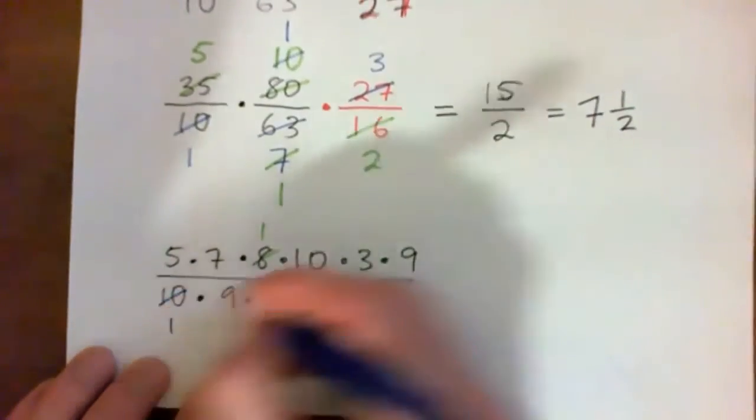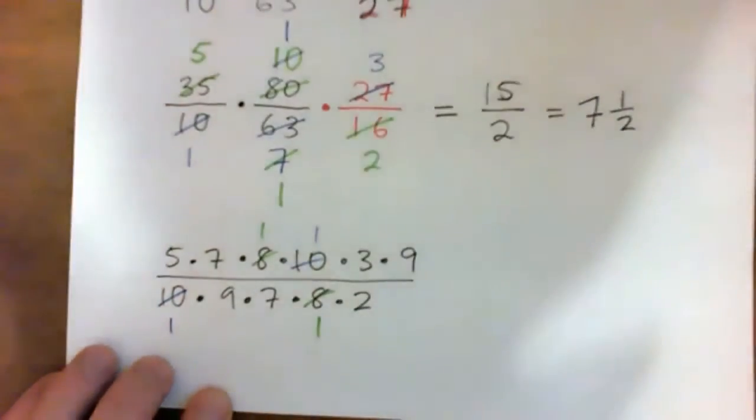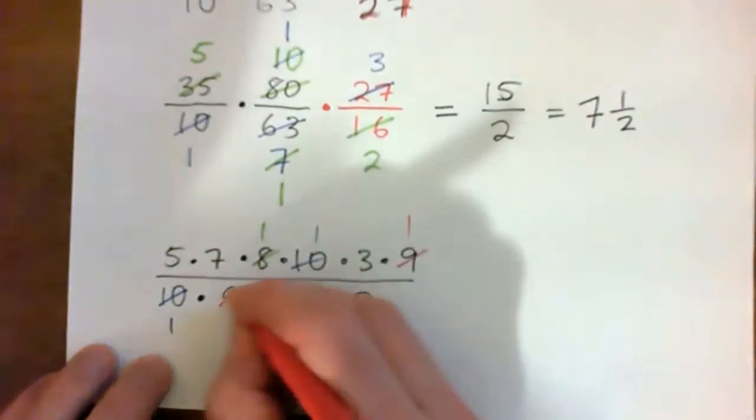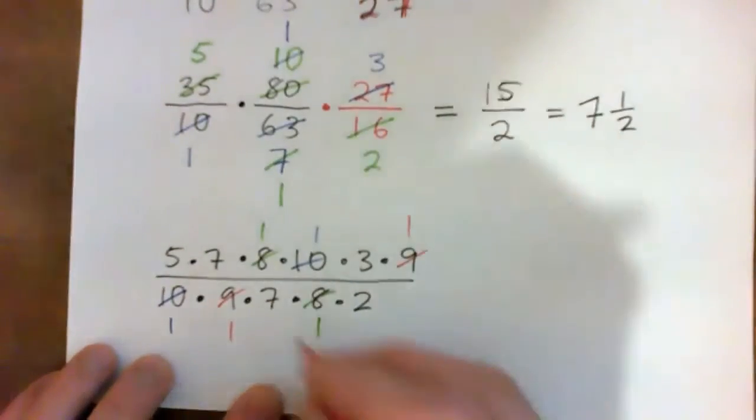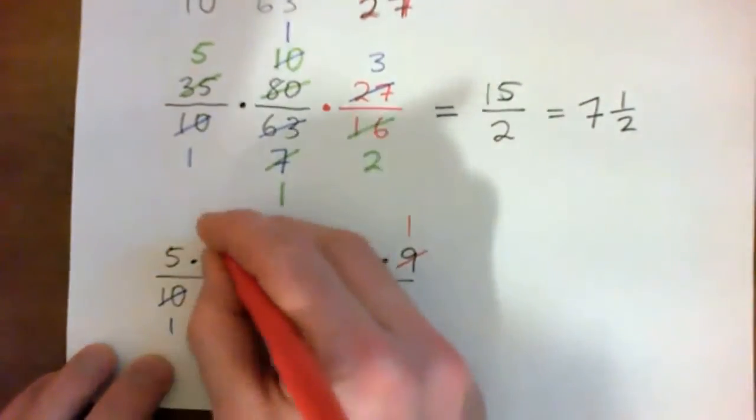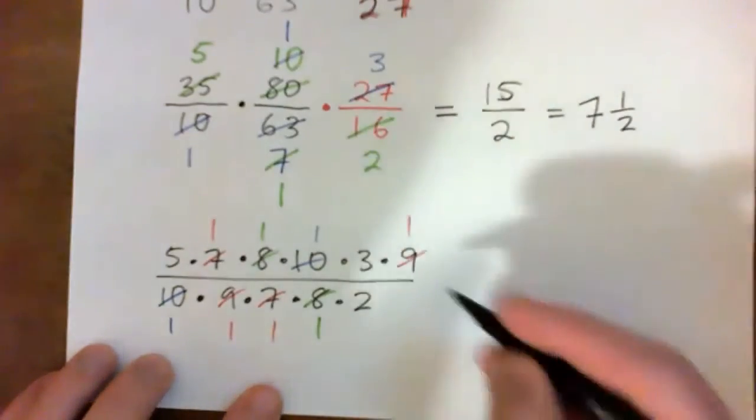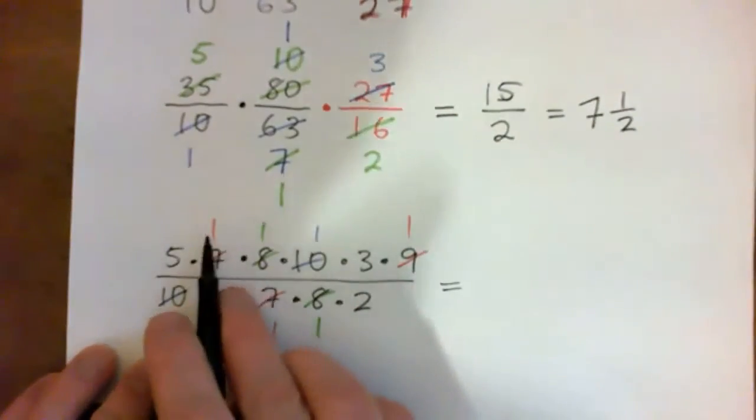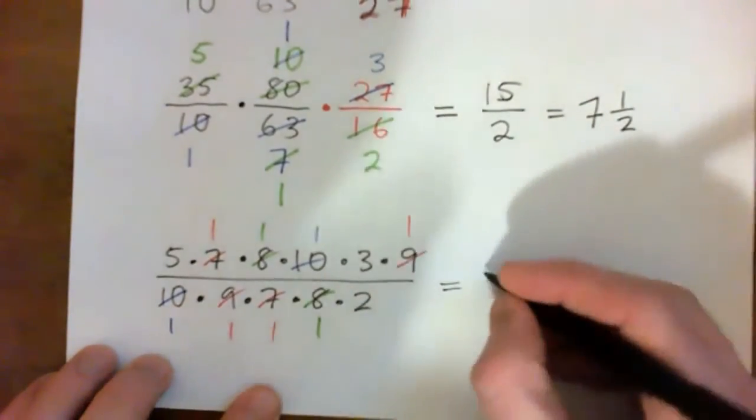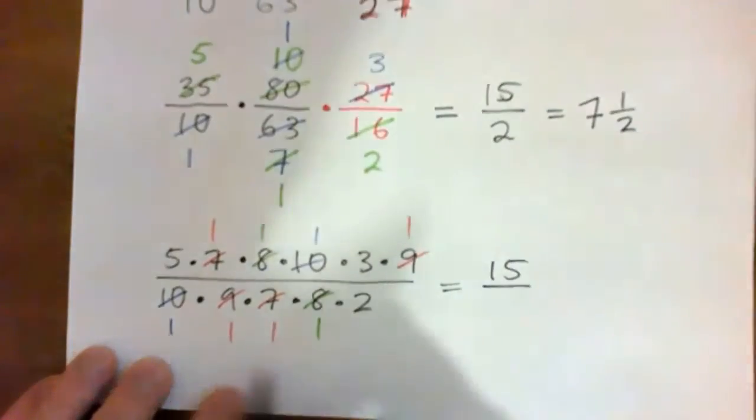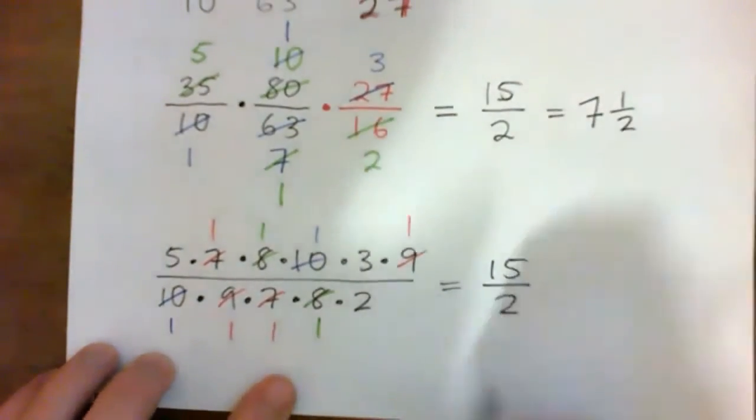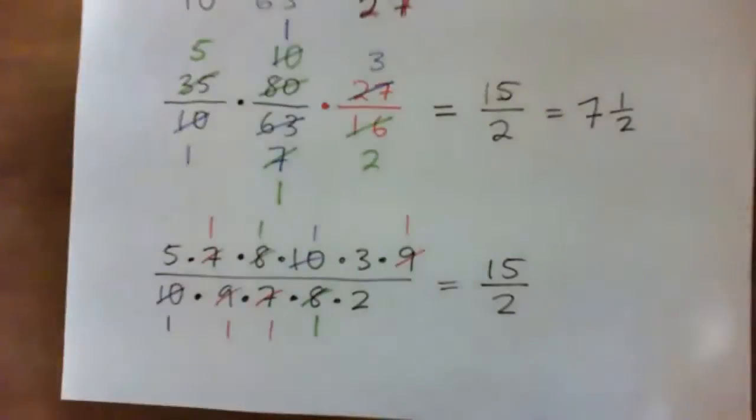So 8 and 8 goes once, 10 to 10 goes once, 9 into 9 goes once. Look at that. There we go. Here's a 7 into 7 goes once. And we're left with the same thing. It's like 5 times a bunch of 1s times 3 times another 1 is 15 over a bunch of 1s times 2, right? Okay. But the point is, keep going.